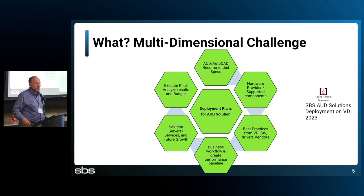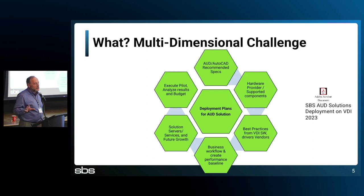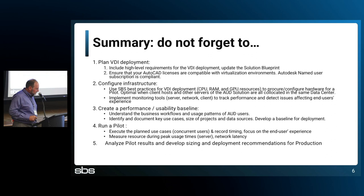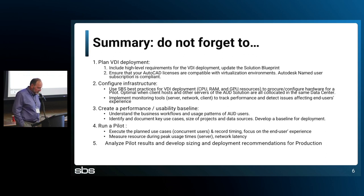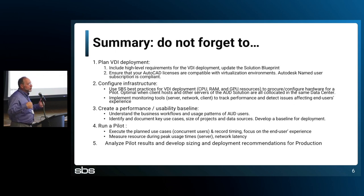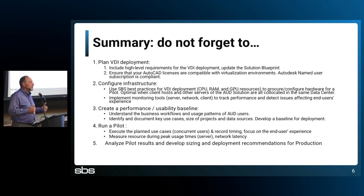We have worked with quite a few organizations to set this up, and you sometimes see things that were never expected with a normal setup. In summary, when you do planning for VDI deployment, include high-level requirements and put them in a blueprint as early as possible. It's not necessarily changing the process, but it changes how we configure components of AUD, and we need to know that as early as possible. Licensing is another thing to remember — check with Autodesk what level of license is required and supported for virtualization.